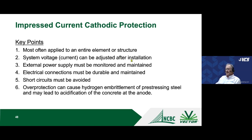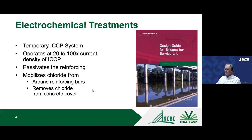To summarize impressed current cathodic protection: it's most often applied to an entire element or structure. The system voltage can be adjusted after installation — that's a key advantage. The external power supply must be monitored and maintained, which is a cost but ensures the system is working. Electrical connections must be durable and maintainable — everything inside concrete should be welded or coated. Short circuits must be avoided. For prestressing steel: over-protection can acidify the concrete at the anode and cause hydrogen embrittlement of the steel.